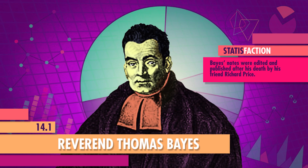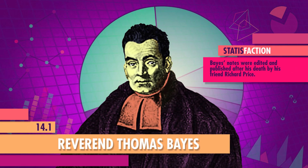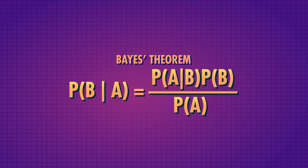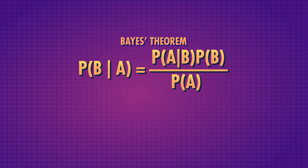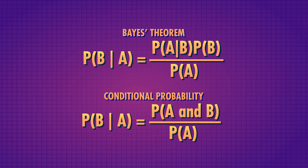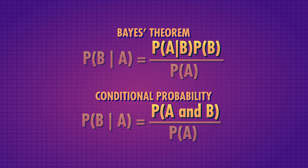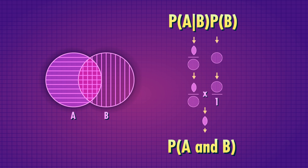The 'Bayes' in Naive Bayes comes from the Reverend Thomas Bayes, a Presbyterian minister who broke up his days of prayer with math. His largest contribution to the field of math and statistics is a slightly expanded version of our conditional probability formula. Bayes' theorem states that the probability of B given A is equal to the probability of A given B, times the probability of B, all divided by the probability of A. You can see this is just one step away from our conditional probability formula. The only change is in the numerator, where probability of A and B is replaced with probability of A given B times probability of B.